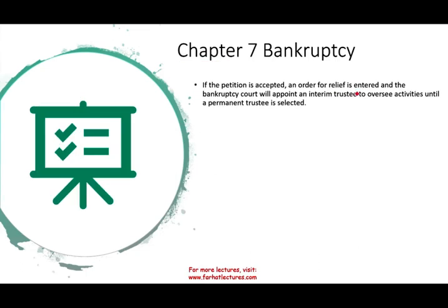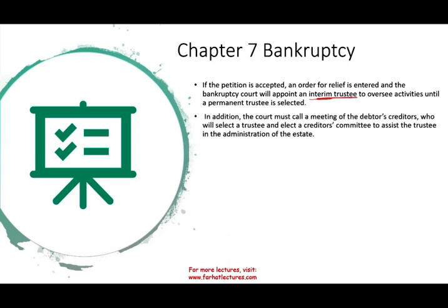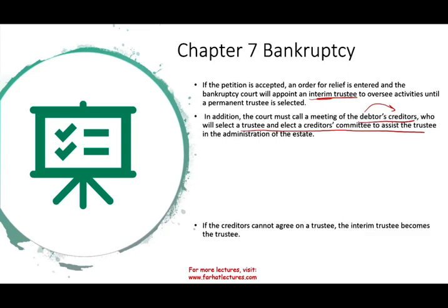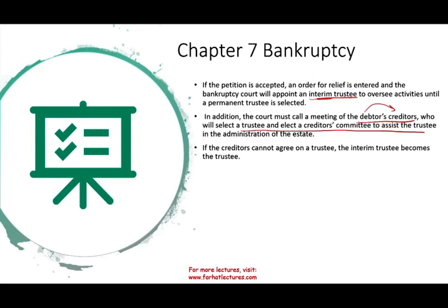If the petition is accepted, an order of relief is entered and the bankruptcy court will appoint an interim trustee — either a lawyer, accountant, or some person — to oversee activity until a permanent trustee is selected. The court will also call for a meeting of the debtor's creditors, who will select a trustee and elect a creditors' committee to assist in administration of the estate. If they cannot agree on a trustee, the court-appointed trustee will serve. Only creditors who file a claim at or before the meeting are entitled to vote.